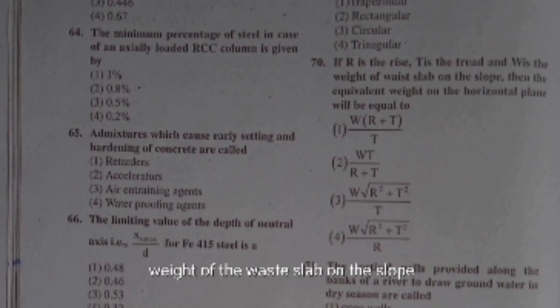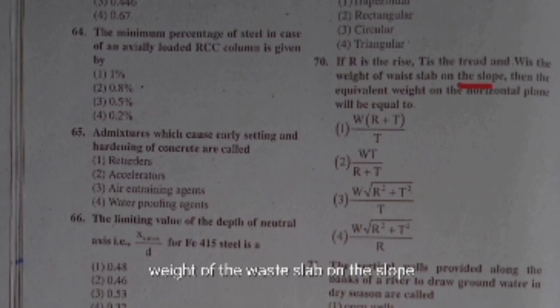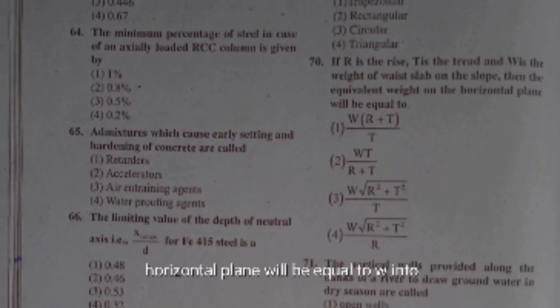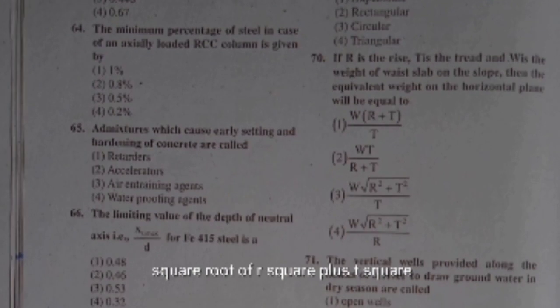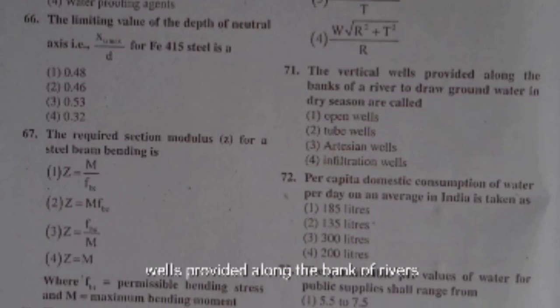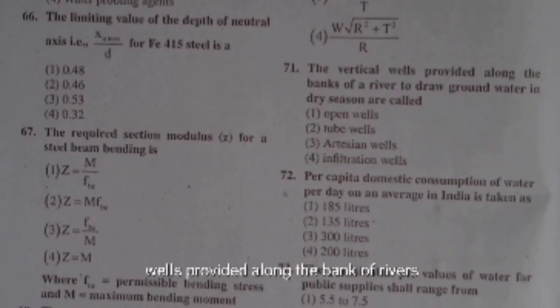If R is the rise, T is the tread, and W is the weight of the waist slab on the slope, then the equivalent weight on the horizontal plane is W × √(R² + T²) / T. The vertical wells provided along the bank of rivers to draw groundwater in the dry season are called infiltration wells.